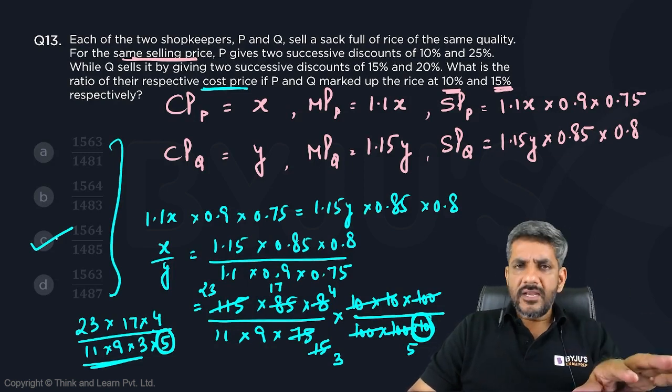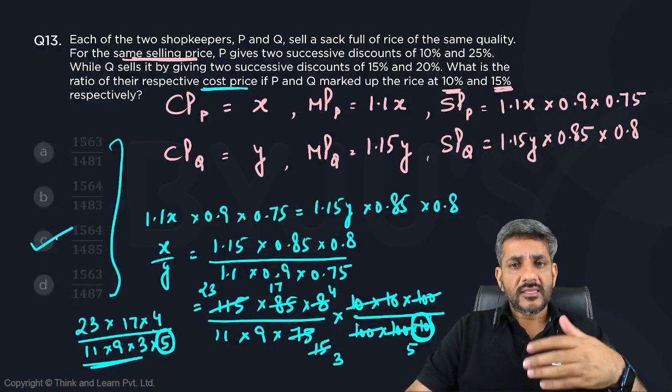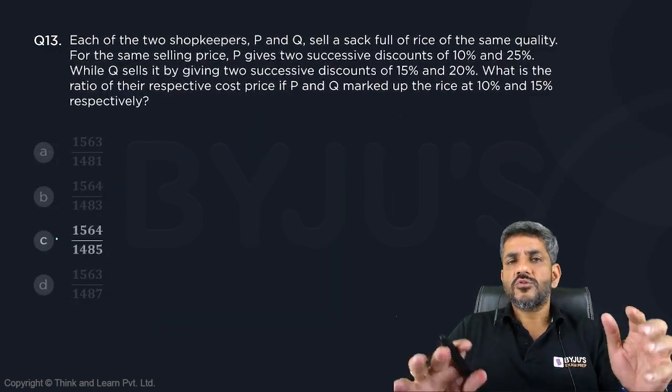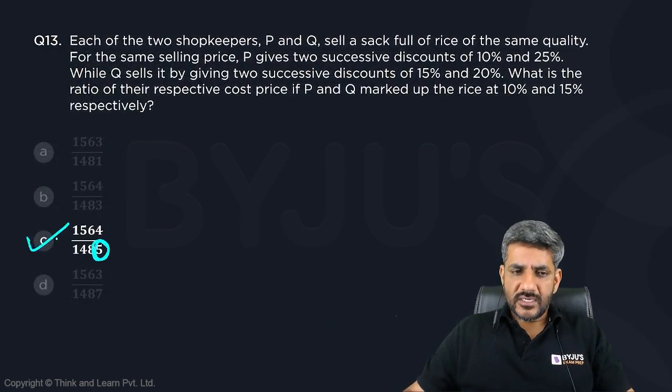In this question, I would consider it as above moderate. The simple reason is the kind of calculations involved. Though conceptually, it's an easy question in my opinion.